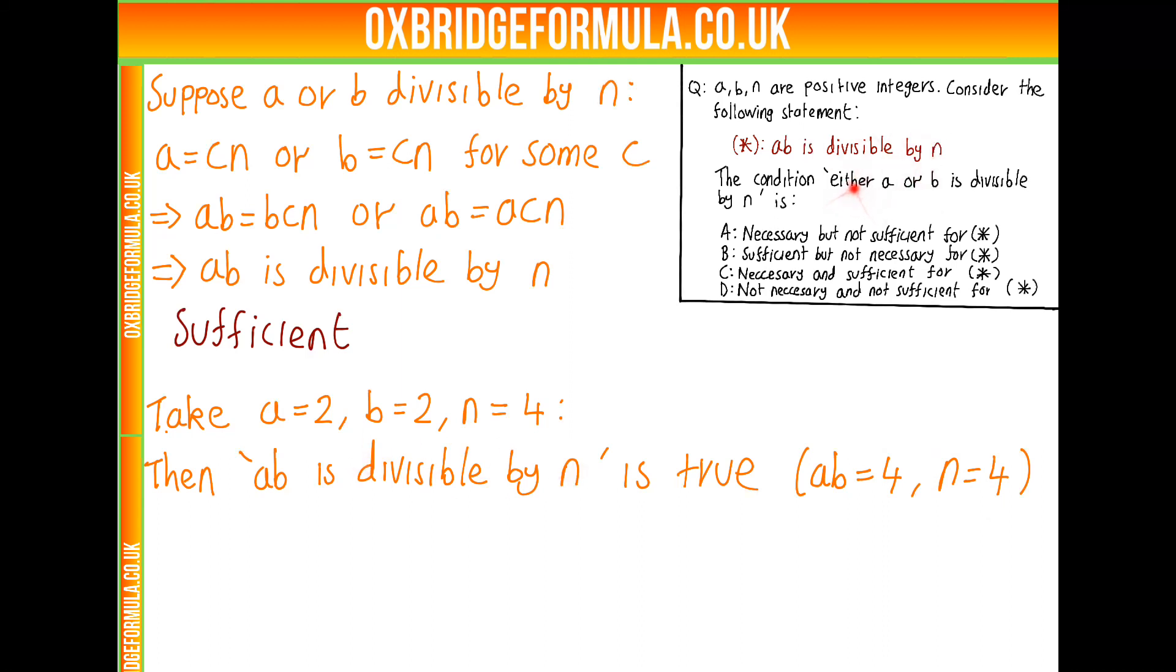So we know AB divisible by N is a true statement. So what about either A or B is divisible by N? Well, we know this is false because 2 isn't divisible by 4. And so A isn't divisible by N and B isn't divisible by N. And so we found a case where star is true, but either A or B is divisible by N isn't, which implies we do not have necessity.